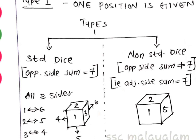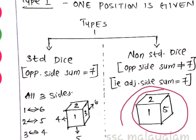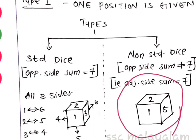This is a non-standard die. In a non-standard die, the opposite sides do not sum to 7. Instead, adjacent sides sum to 7. For example, 5 plus 2 are adjacent sides summing to 7 in a non-standard die.